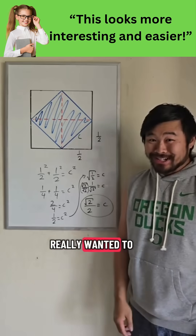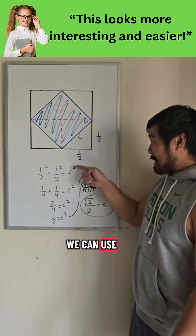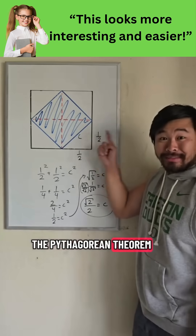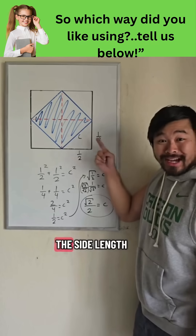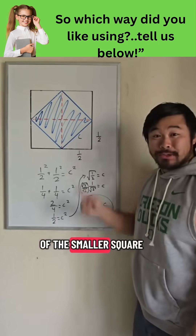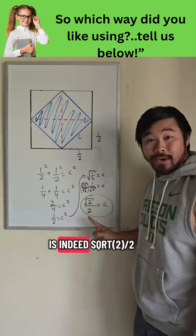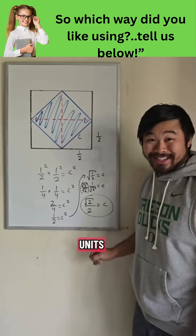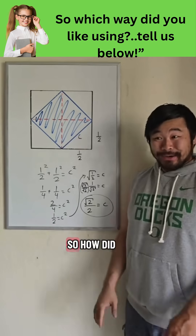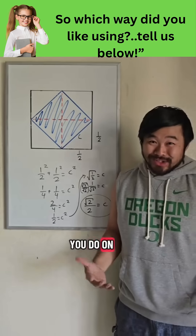And if you really wanted to, we can use the Pythagorean theorem to show that the side length of the smaller square is indeed the square root of 2 over 2 units. So how did you do on this challenge? Let me know in the comments.